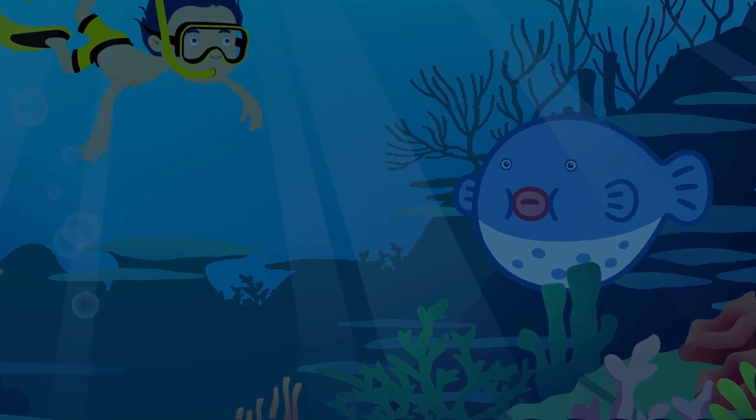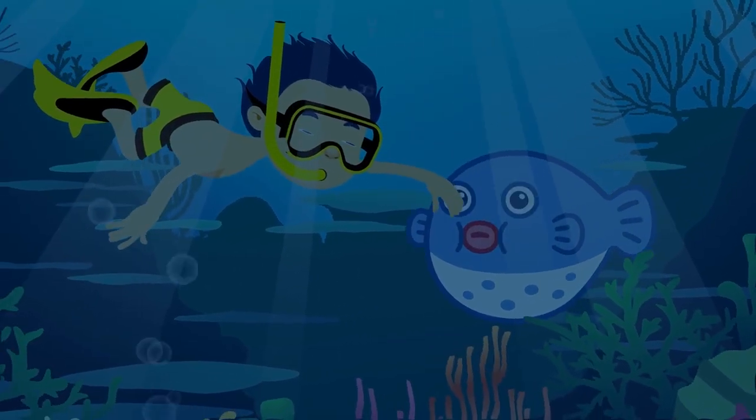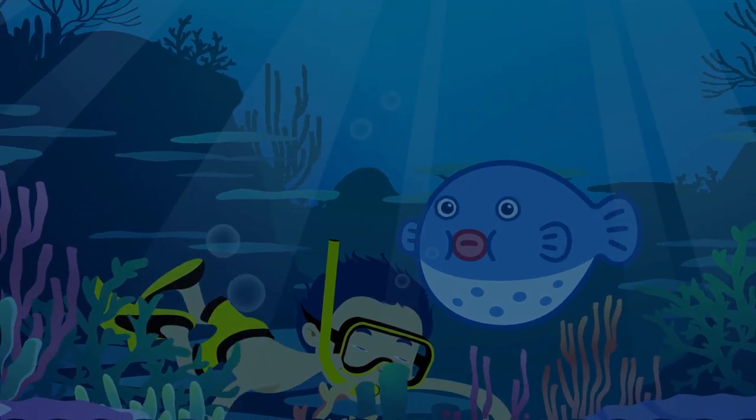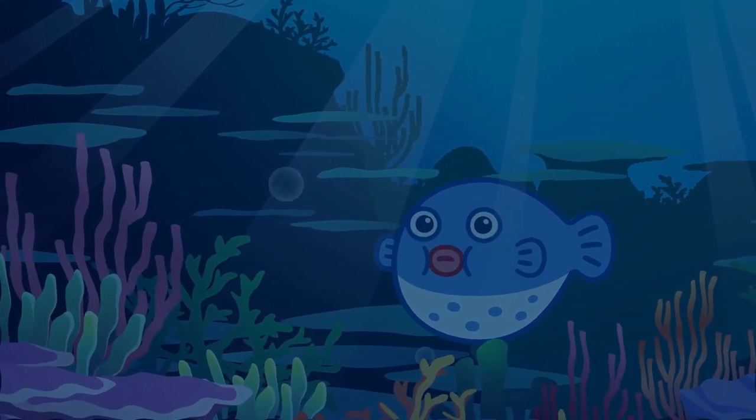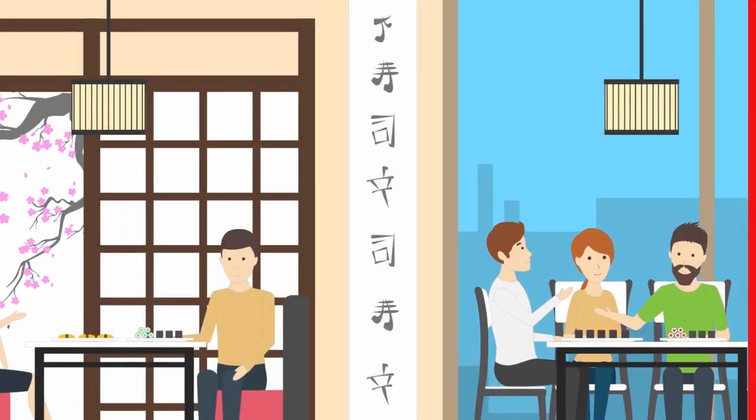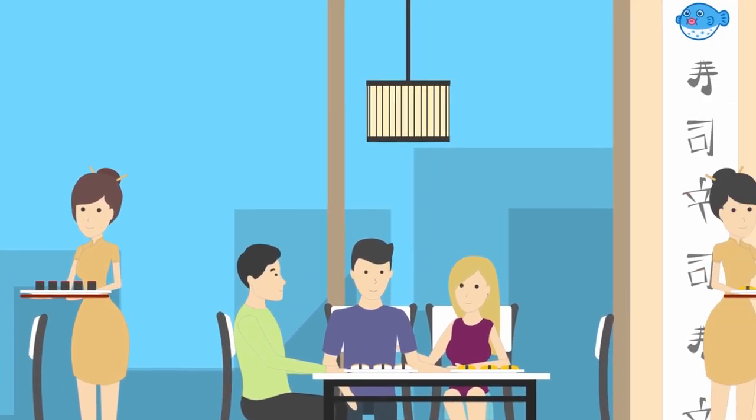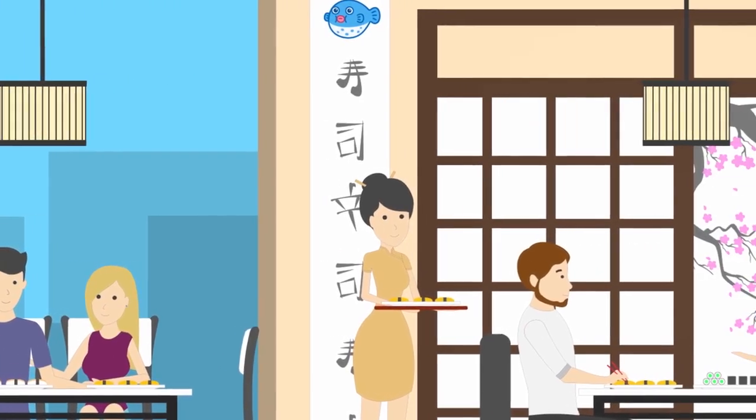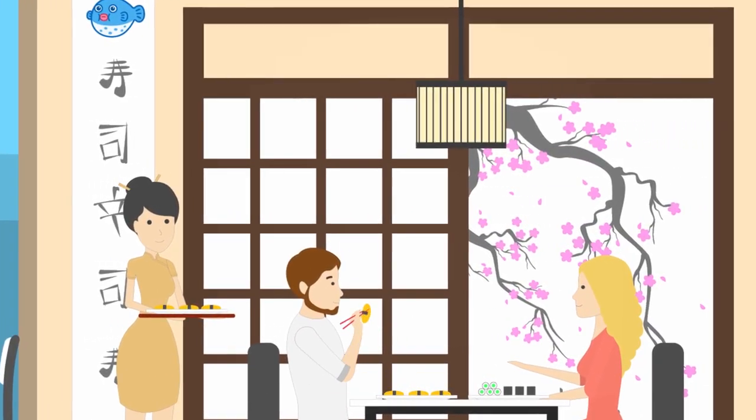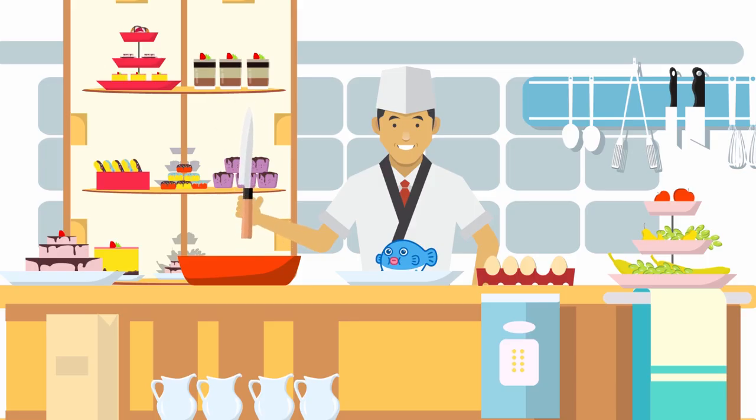And then there's the pufferfish. While the sea creature may look all cute and friendly, its tetrodotoxin is deadly, up to 1,200 times more than cyanide. There is no known antidote to the pufferfish toxin, but that doesn't stop people from enjoying this Asian cuisine delicacy. Called fugu in Japanese cuisine, you have to pay a pretty penny to eat pufferfish, and it can only be prepared by a trained and licensed fugu chef.